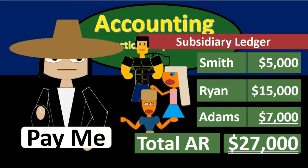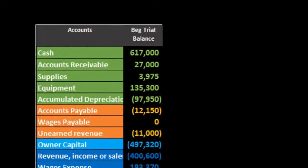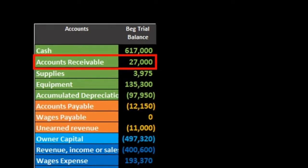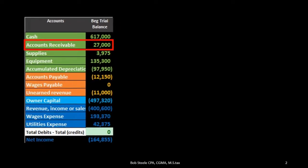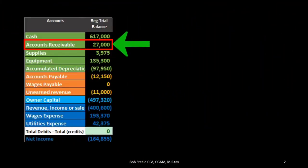In this lecture we're going to talk about the accounts receivable subsidiary ledger — the ledger that backs up the accounts receivable account shown on the trial balance with $27,000 in it. Accounts receivable represents what is owed to us. If we were the owner of the company we might ask our accounting department how much money people owe us, and the reply would be $27,000.